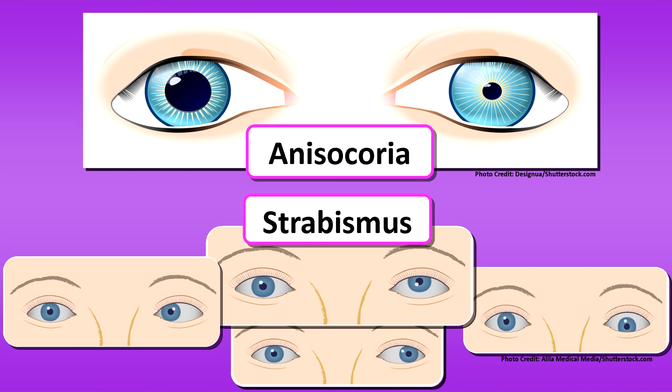Next, you want to look at anisocoria, where one pupil is smaller than the other. Are they equal in size? Normal pupils should be three to five millimeters in measurement. His are about three millimeters and they are equal.